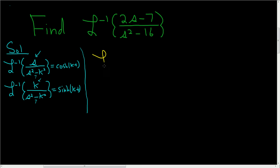So using the fact that the inverse Laplace transform is linear, we can write this as 2s over s squared minus 16 minus, skipping some steps here, 7 over s squared minus 16.